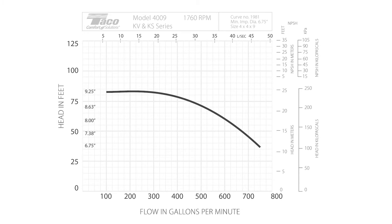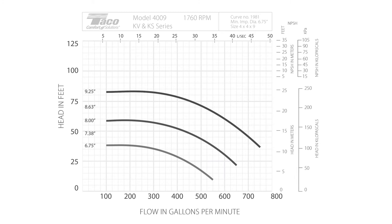This is the curve for this particular pump with the largest impeller diameter — in this case, it's 9.25 inches. We do the same thing with the data points for an 8 inch diameter impeller and a 6.75 inch impeller.